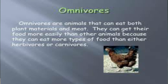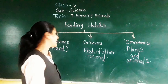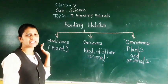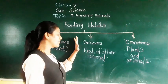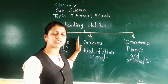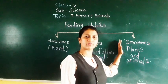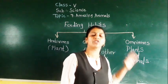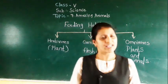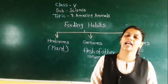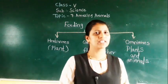So food feeding habits are mainly classified into three types: herbivorous, carnivorous, and omnivorous. Herbivorous animals only eat plants. Carnivorous animals eat the flesh of other animals. Omnivorous animals eat both plants as well as animals — they are called omnivorous animals.